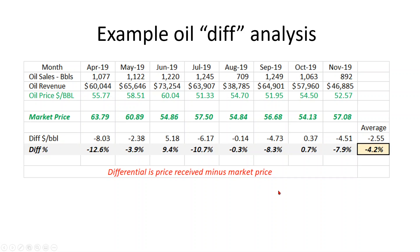Here's an example of a differential analysis for an oil well. We have eight months of data, with oil sales volumes each month and the gross oil revenue received — gross before royalties and taxes. You divide the revenue by the barrels to get an average price each month; the first month is $55.77 per barrel. Then you add your historical market prices and compare the price received to the market price, because the differential is the price received minus the market price. In this first month it's negative $8. Using differential as a percent of market price, you divide negative $8 by $63 and get negative 12 percent for this month.